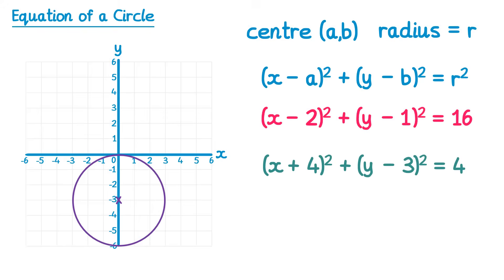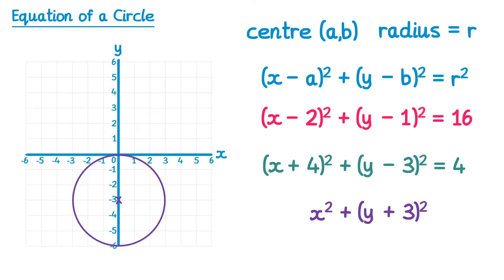Now for this circle. The x coordinate of the center is zero, so we do (x plus 0) all squared which of course is just x squared, and the y coordinate of the center is negative three. We're going to do the opposite sign, so (y plus 3) all squared equals the radius squared, and the radius of this one is three, so it equals three squared which equals nine.